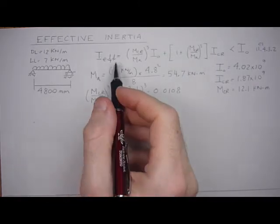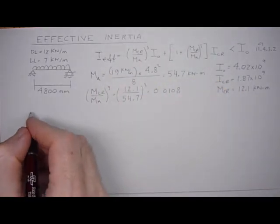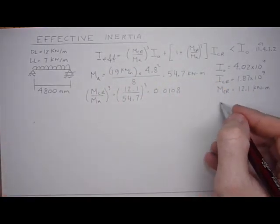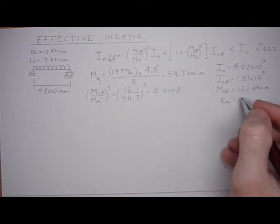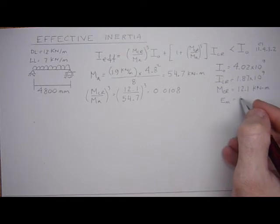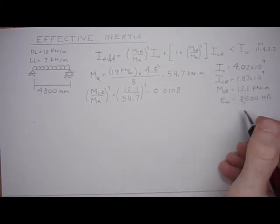So now it's just a matter of really plugging into this equation to get the I effective. Oh, one more thing, I have also the E of the masonry, which is 850 times F prime M. So we already did that, we calculated 8500 MPa because F prime M was 10.